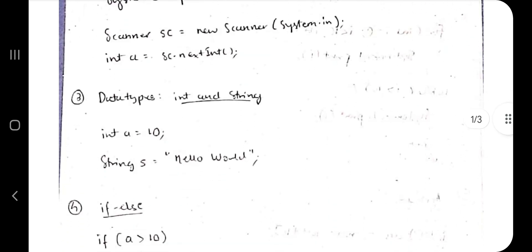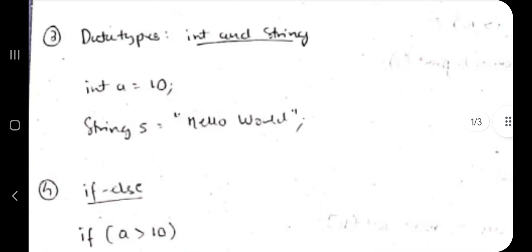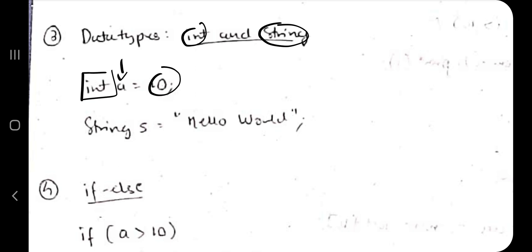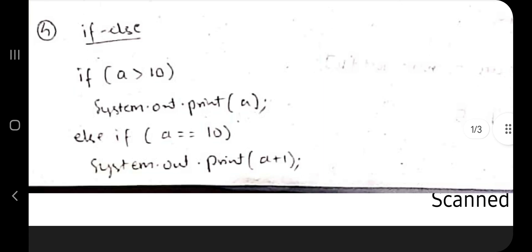Moving on, we have the two main mostly used data types. The first one is int and second is String. For declaring an integer variable, write int a equals 10. Second thing, String s and whatever the string you want to store, store it within double quotes.